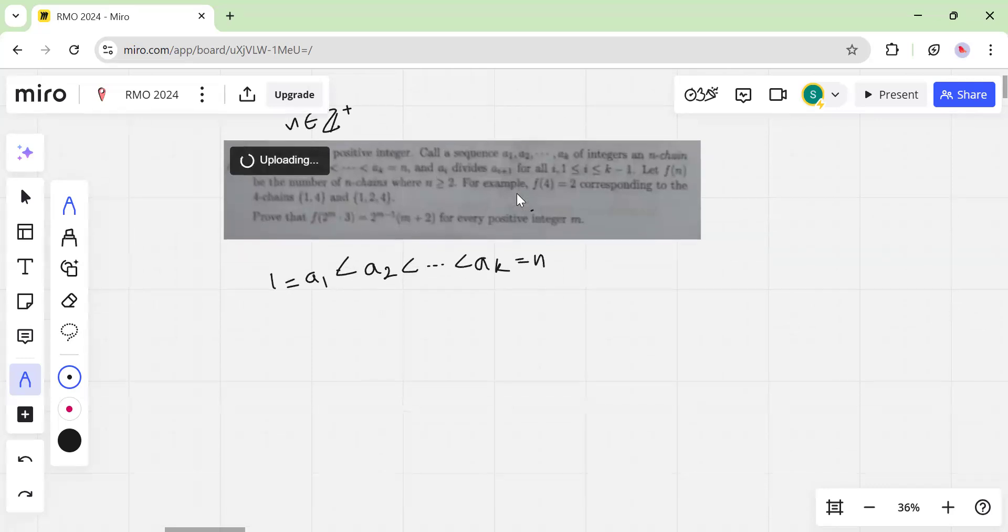So for example, you can start with one and then take a multiple of one which is say two, the multiple of two, six, and then multiple of six. So if you choose to end over here, then this thing is a 12-chain because it ends with 12.